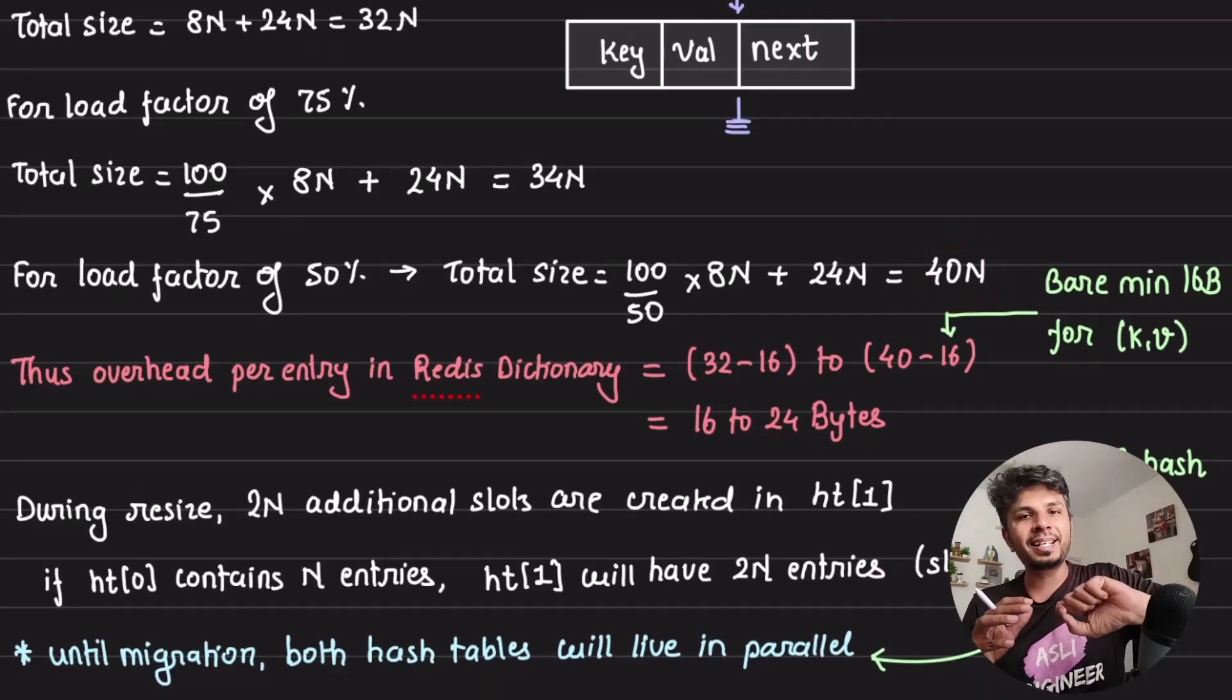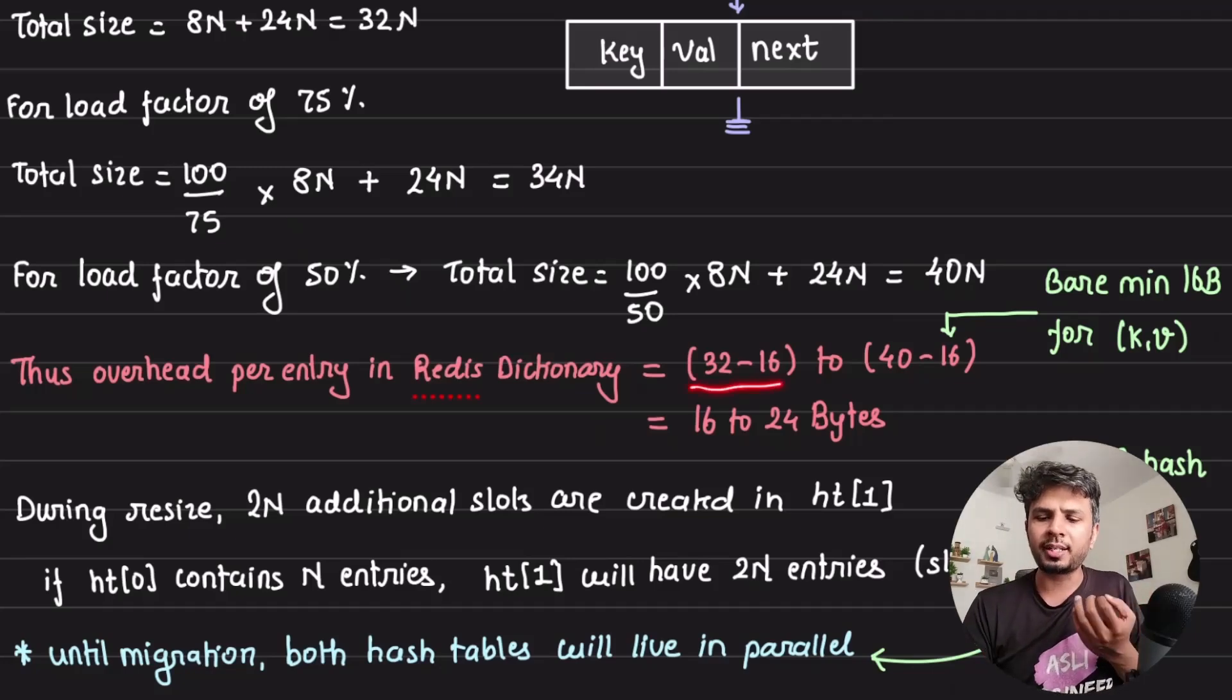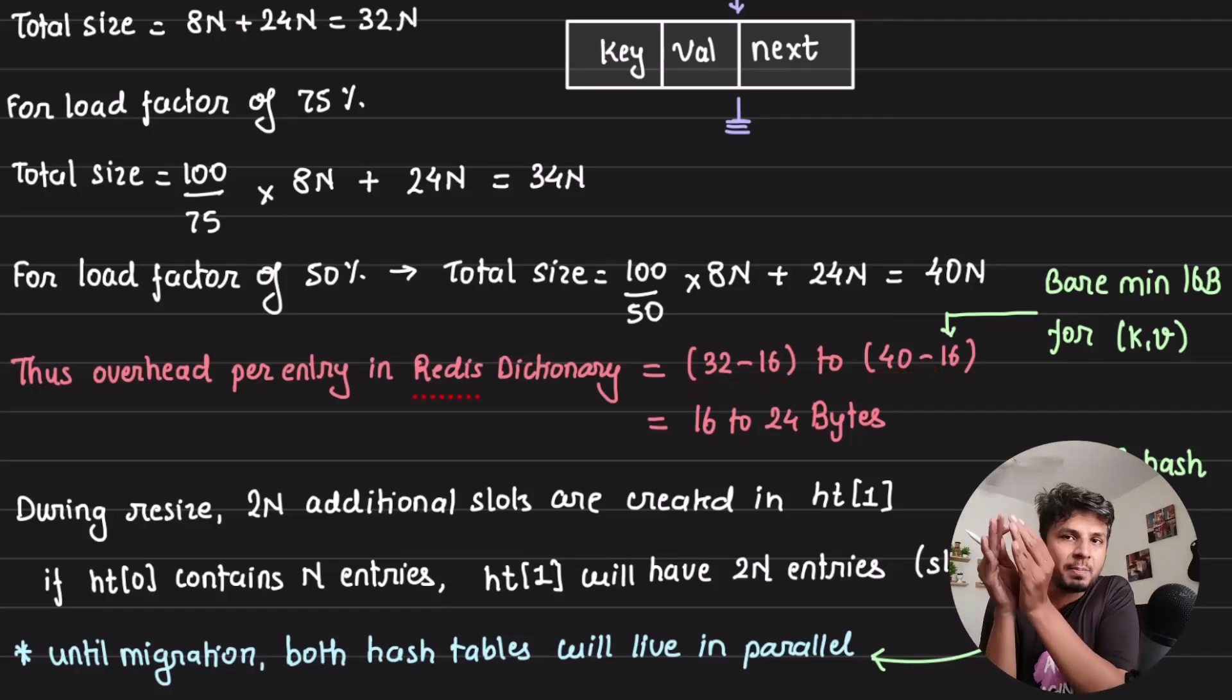If I constitute my overhead per entry in Redis dictionary, it would be equal to 32 minus 16 or 40 minus 16. Basically the bare minimum I need to hold the data, which is key and value. Everything else is data structure overhead.